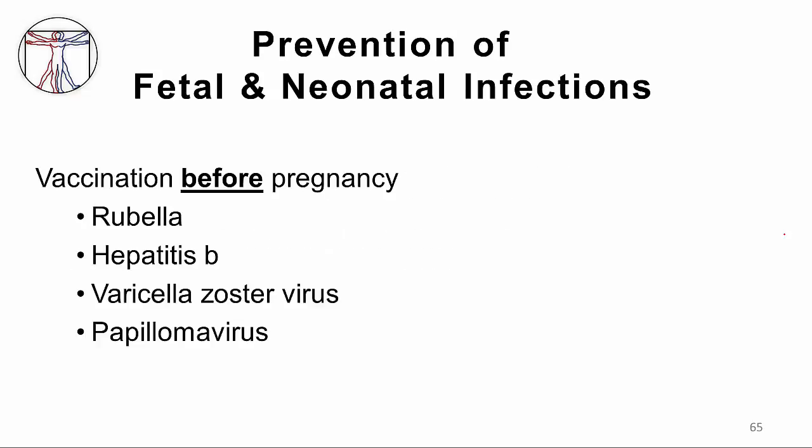Vaccination is certainly the best strategy, but there are a limited number of vaccines relevant to the prevention of vertical infections. All persons in North America are vaccinated against rubella, hepatitis B, the chickenpox vaccine (VZV), and papillomaviruses. So these are vaccine-preventable infections, but they don't represent most of the perinatal infections — for example, herpes is not vaccine-preventable.